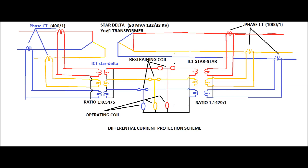A schematic diagram for the operation of a differential current protection scheme for a three-phase power transformer operating at 50MVA, 132/33kV, YNd, has been shown in this figure. The CT ratios used on the HV side are 400/1 and on the LV side 1000/1. ICTs are used on either side of the transformer for phase and amplitude matching so that under normal load condition, the relay current for both windings shall be the same. The ratio of ICTs on the star-delta side is 1 to 0.5475.